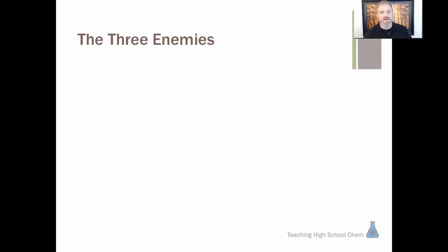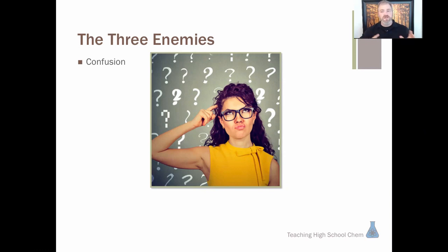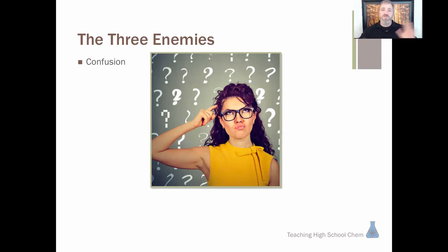The three enemies of classroom engagement. First: confusion. If a kid says 'I don't understand' or 'this is too hard,' that's a red flag that their ability to engage is being threatened. If that continues too long without us addressing it, eventually the kid's going to check out — they're gone for the rest of the chapter or the rest of the year. You've lost their engagement, their ability to be actively learning in class, because they got too confused.